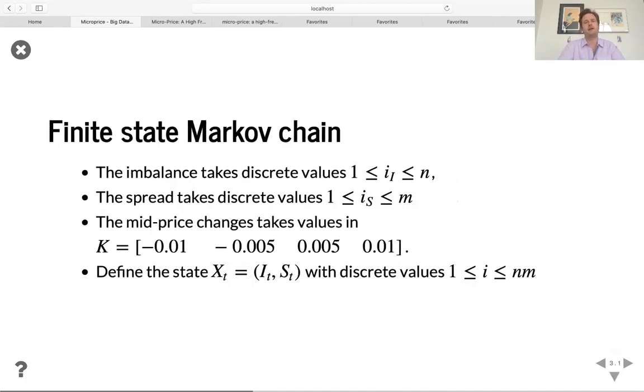Now let's define the Markov states. So the imbalance takes n values and we should discretize the imbalance, which is a continuous variable. And the spread is already discretized and basically is given by the number of ticks. And another important factor is the assumption that the mid price, when it does change, does not change by more than one tick at a time. So as you can see, the mid price can go down by a full tick, it can go down by half a tick, can go up by a half a tick and go up by a full tick. And so we can see that you can define this state space X, which has n times m values.